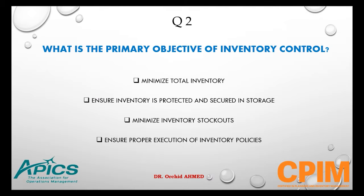Question number 2. What is the primary objective of inventory control? Options: minimize total inventory, ensure inventory is protected and secure in storage, minimize inventory stockout, or ensure proper execution of inventory policies.